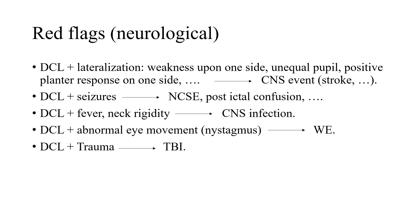We have to search for red flags indicating when to call neurology for a patient with disturbed conscious level. You call neurology when you find lateralization — weakness on one side, unequal pupils, positive plantar response on one side — as a CNS event is suspected. Also when a patient presents with disturbed conscious level and seizure and is unresponsive — they could be in postictal confusion or non-convulsive status epilepticus.